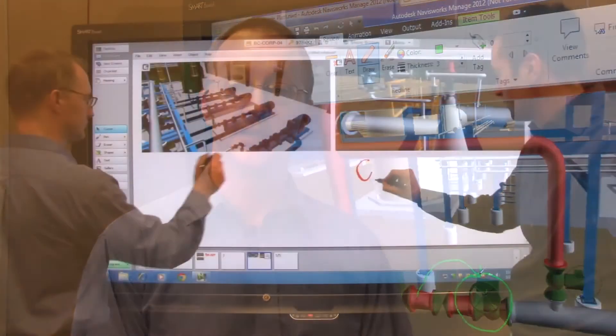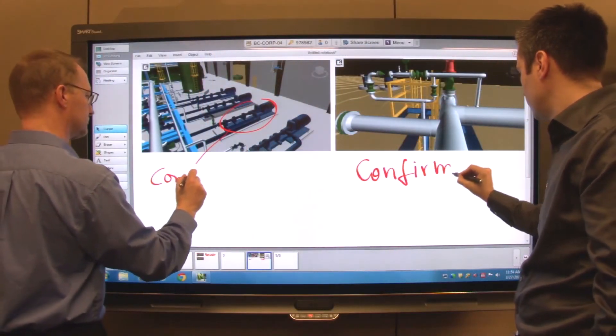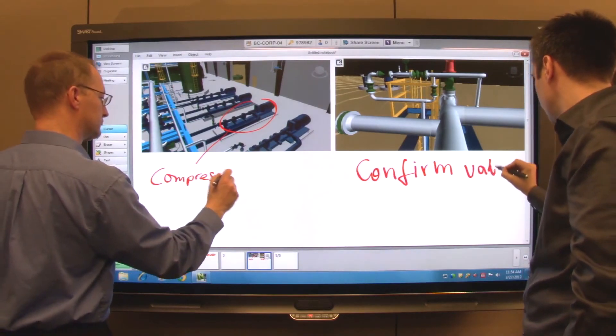With Smart Bridget conferencing, each individual can engage fully in the design review. They can collaborate whether they're in the same meeting room with you, out at the job site, or in an office halfway around the world.